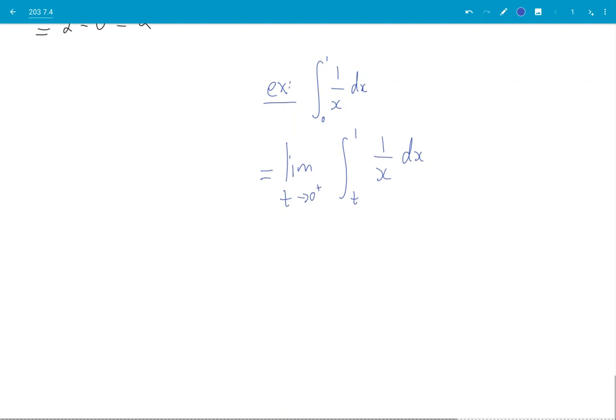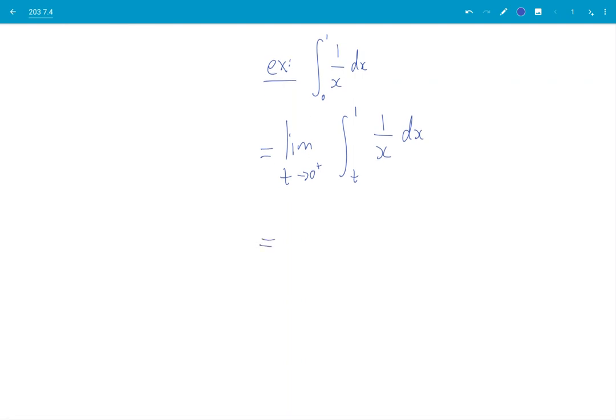Limit t goes to 0 plus t 1, 1 over x. And then we go limit. Oh, boy. This is ln of x. Don't need the absolute value since t is positive. Or x is always positive in this case.